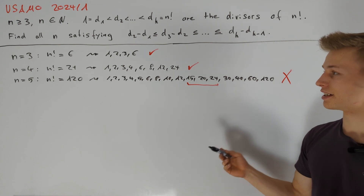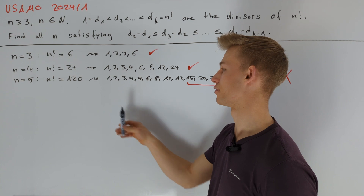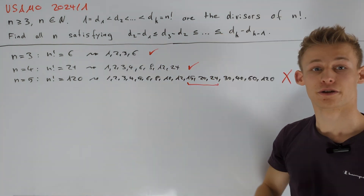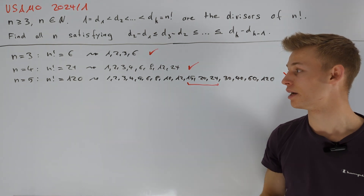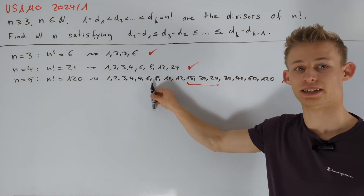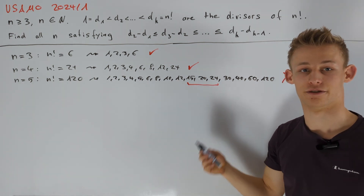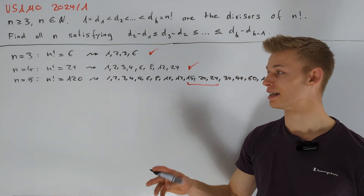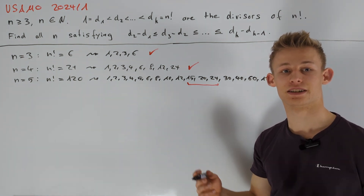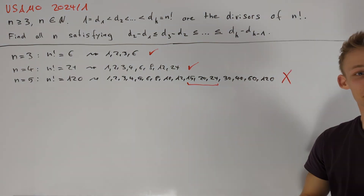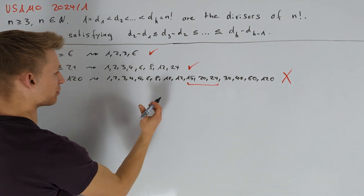Looking at these three examples, we can see that the first few divisors are also the first few positive integers. From the condition that the differences of the divisors are increasing, we know that after the first time we have a non-divisor of n factorial, there can't be two consecutive divisors of n factorial.